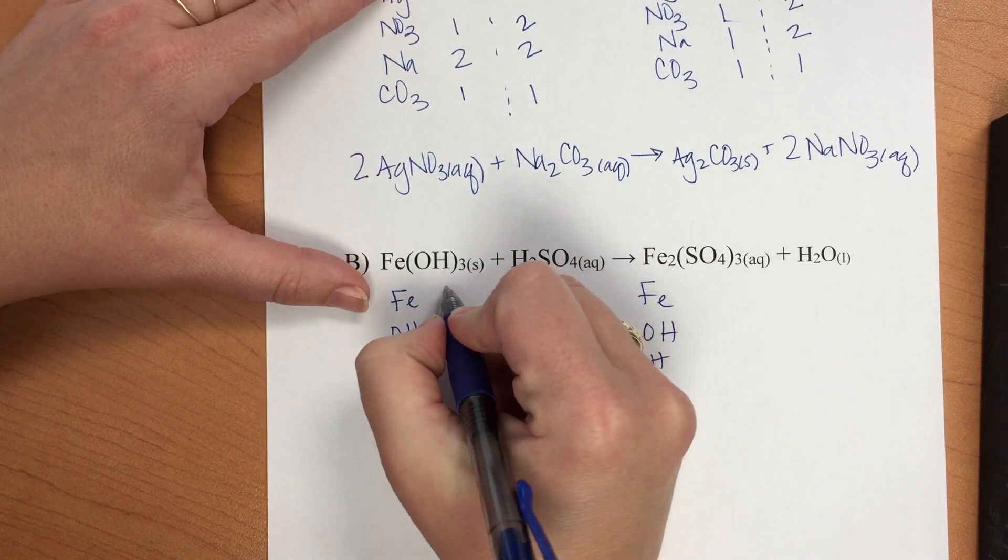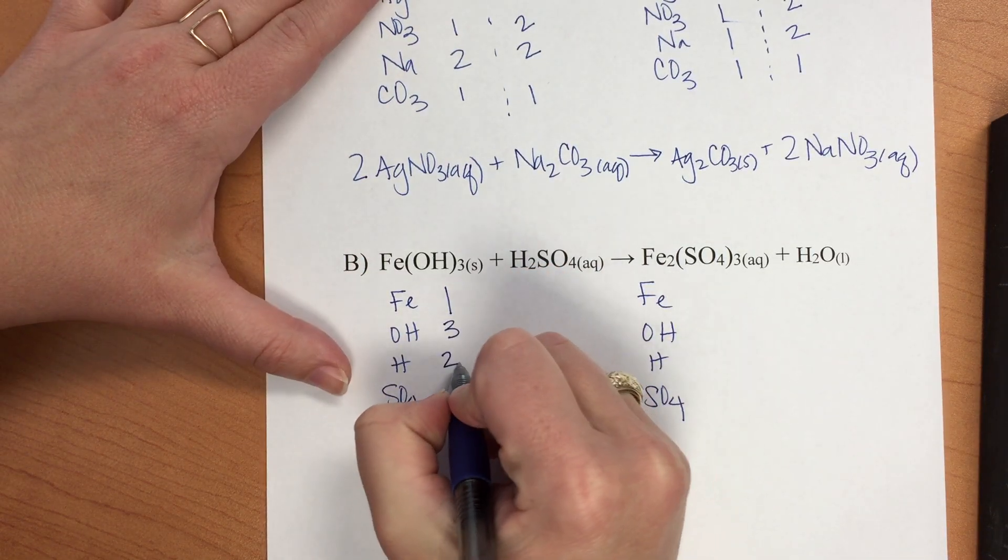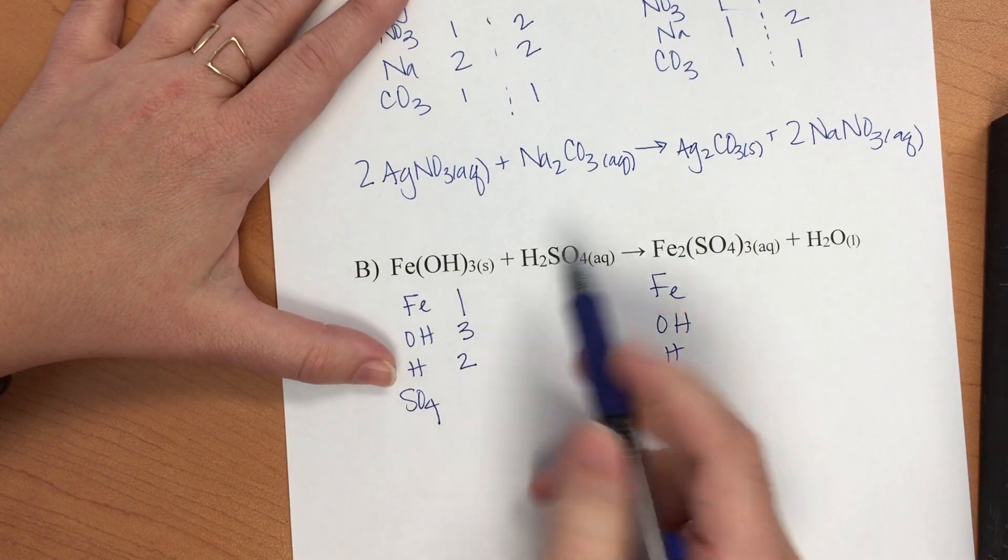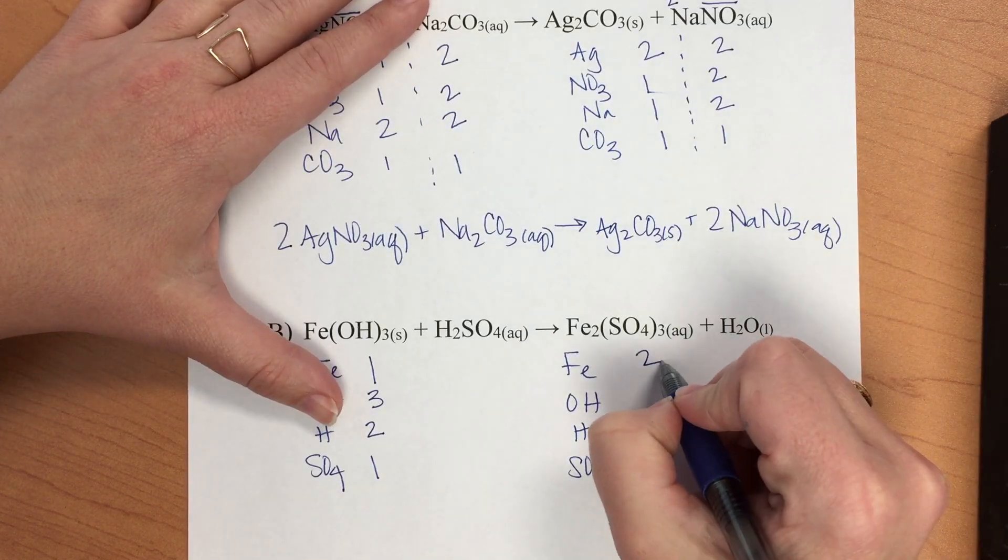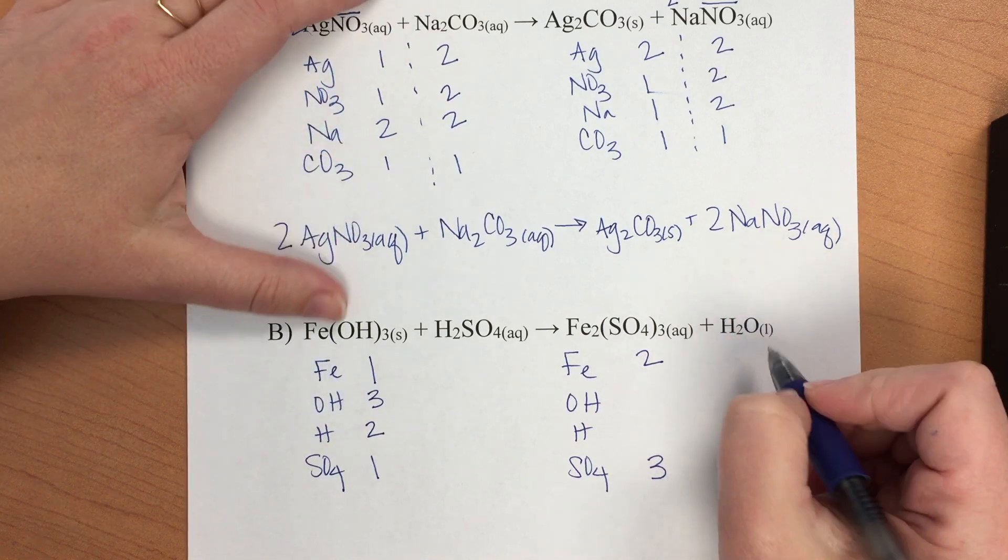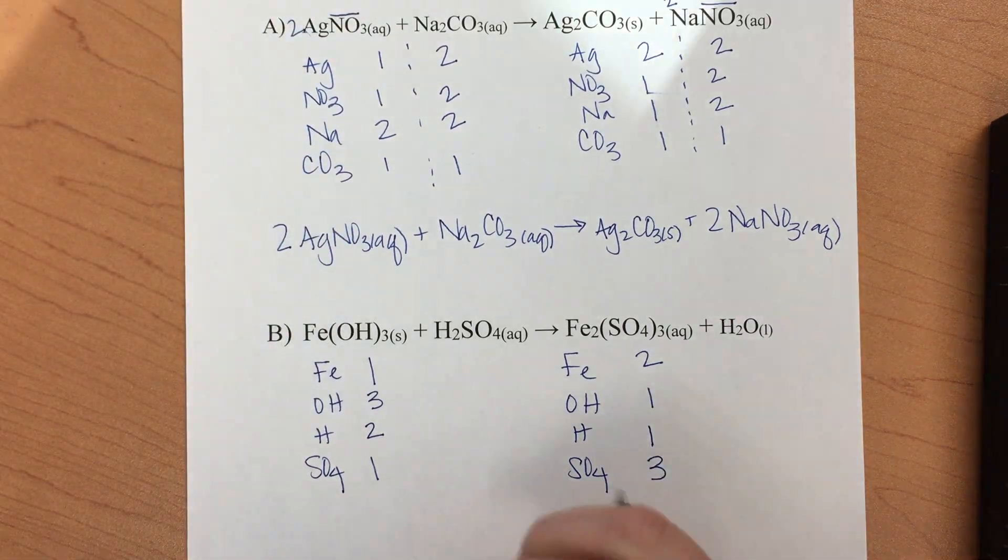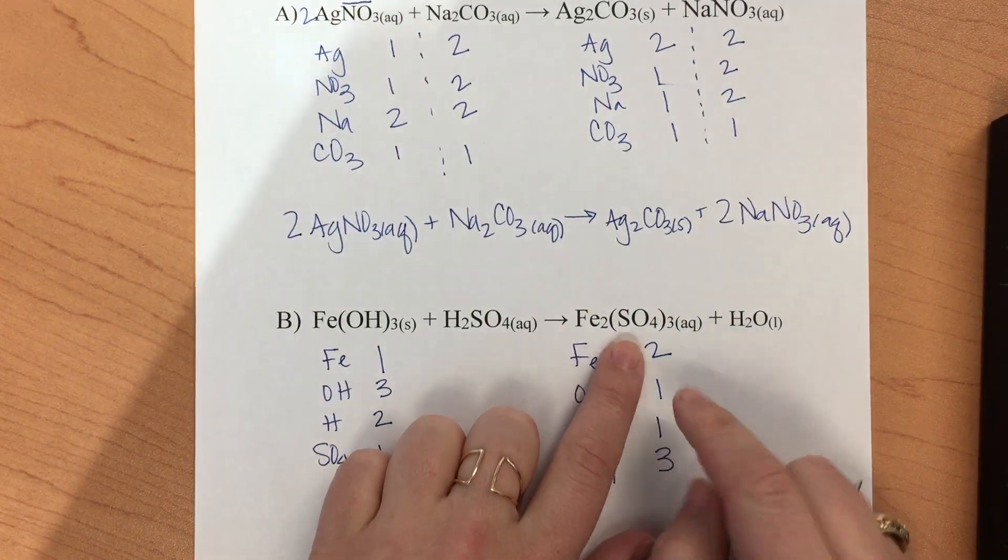In this case, we'll begin by balancing both of the components within this on the reactant side. So we'll add a two in front of the iron and at the same time we're going to add the three for the sulfate here and then see what happens.